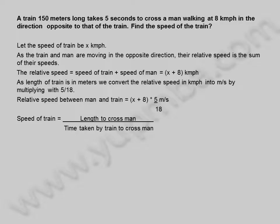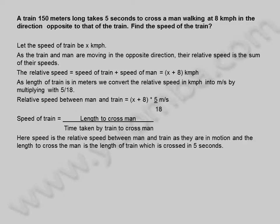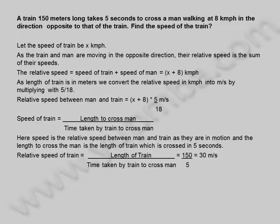Speed of train is equal to length to cross man divided by time taken by train to cross man. Here speed is the relative speed between man and train as they are in motion, and the length of train is crossed in 5 seconds. Relative speed of train is equal to length of train divided by time taken by train to cross man, which is 150 divided by 5, equal to 30 meters per second.